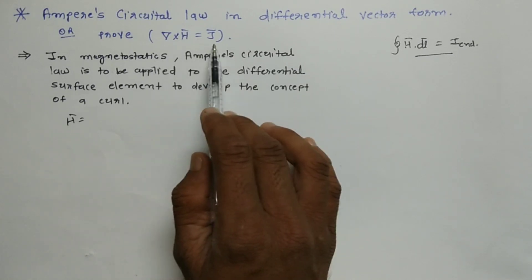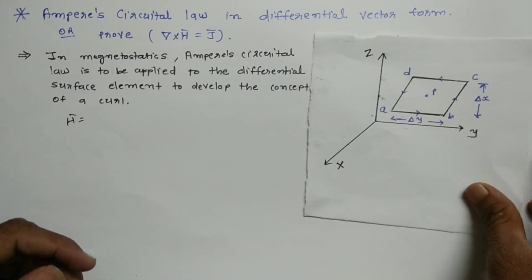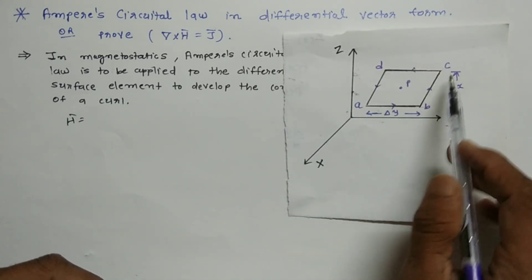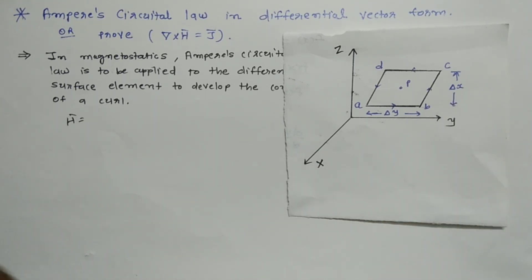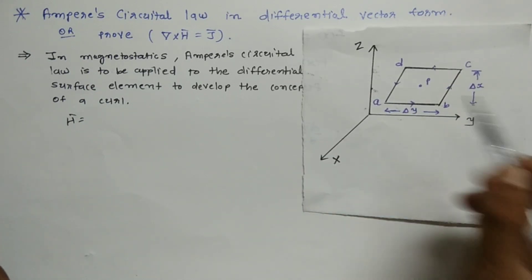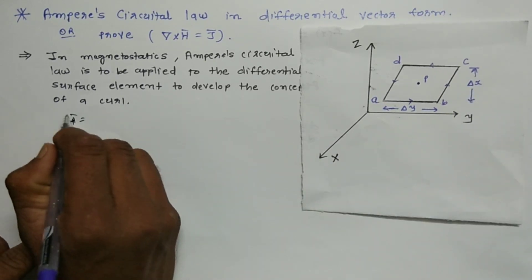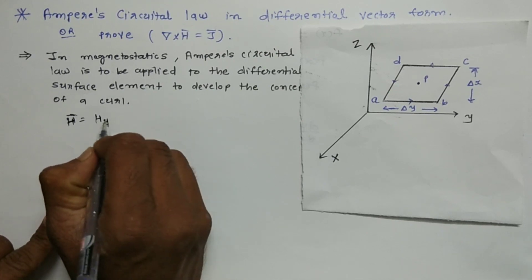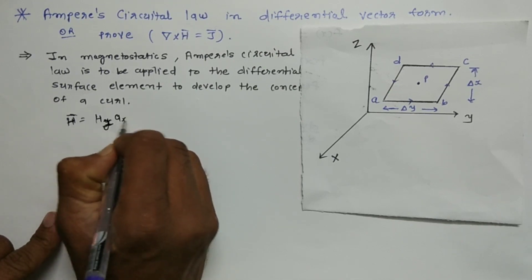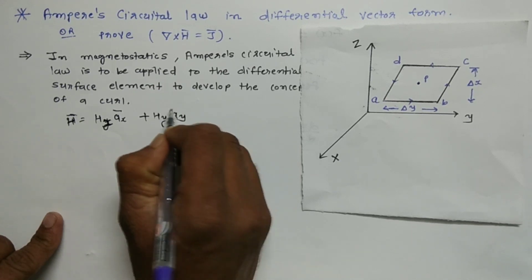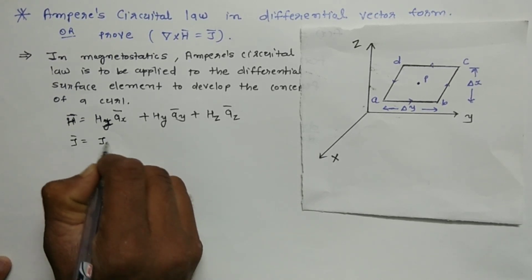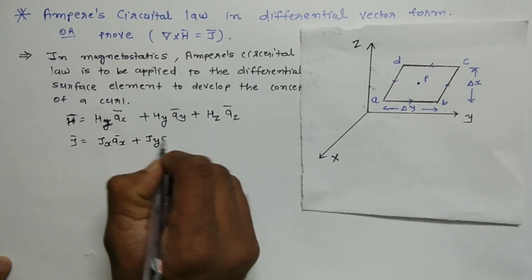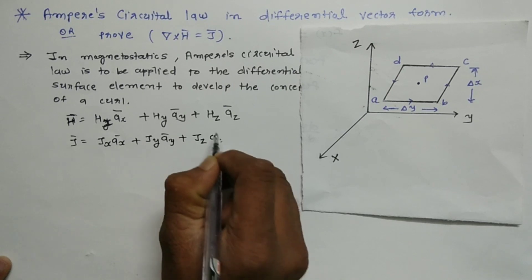For the proof that del cross H bar equals J bar, I am considering a surface differential element plane A, B, C, D in the YZ plane having dimensions delta Y and delta X. Due to the flow of current, assumed at center P, the magnetic field intensity H bar equals Hx·Ax bar plus Hy·Ay bar plus Hz·Az bar. The current density J bar equals Jx·Ax bar plus Jy·Ay bar plus Jz·Az bar.